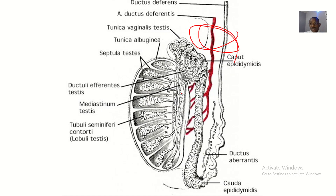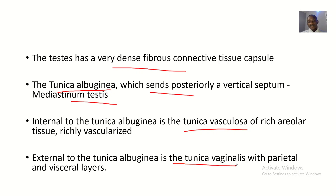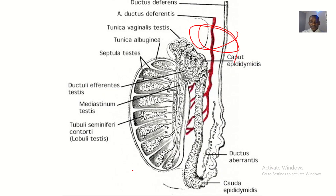That is the tunica vasculosa — the innermost one. Extending outward to the tunica albuginea, since we said the tunica albuginea is the middle part, extending out from the tunica albuginea is the tunica vaginalis. The tunica vaginalis has parietal and visceral layers.